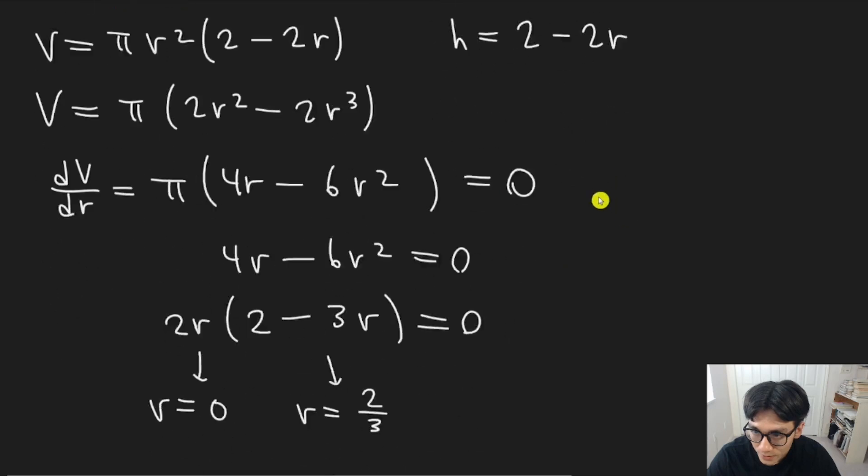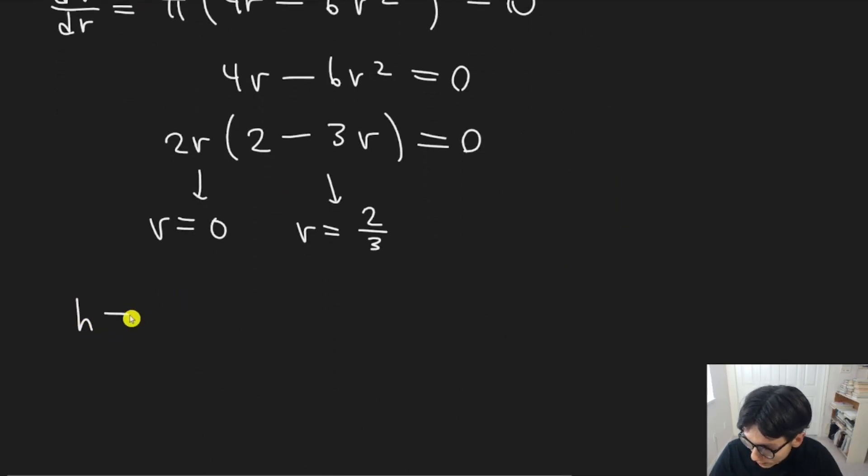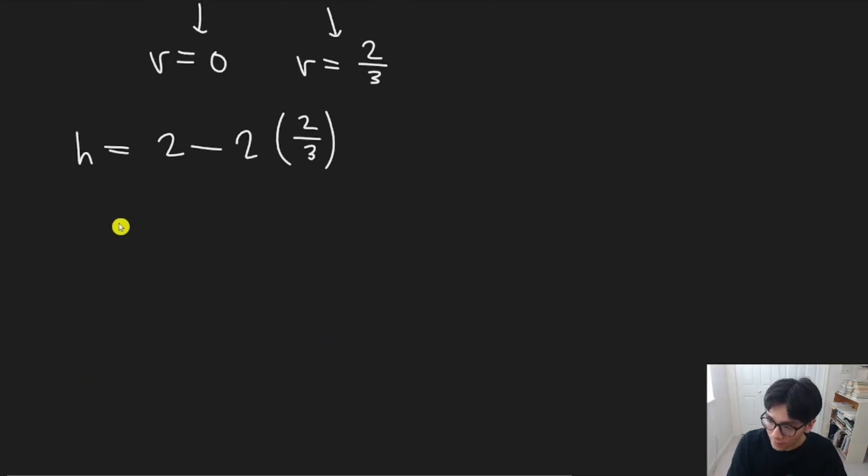This is the relationship between height and radius. So in other words, h is two minus two times two thirds. And then if you do the math here, you're going to get h is equal to two thirds. So our final answer is the radius should be two thirds. And the height should be two thirds in order to get the maximum volume of the cylinder.